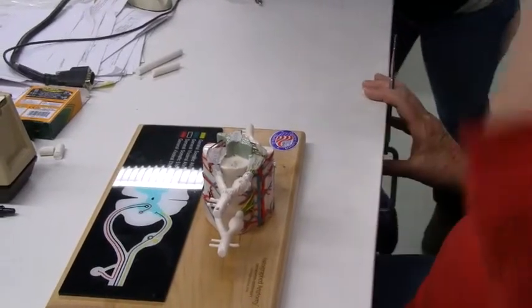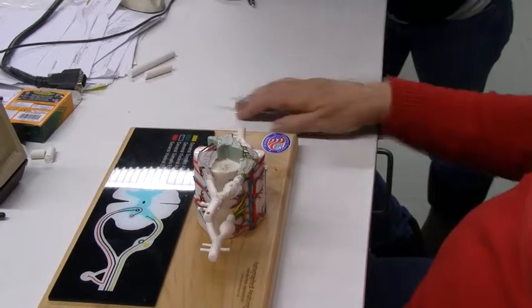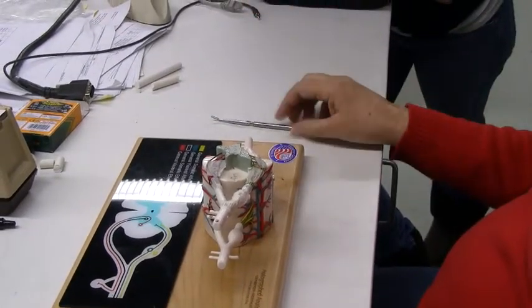Left side of the cerebellum, you lose subconscious proprioception on the left side. Damage the right side, you lose subconscious proprioception on the right side.